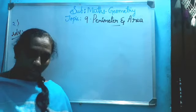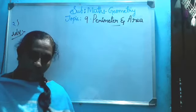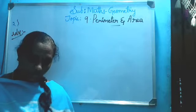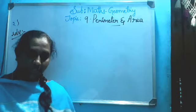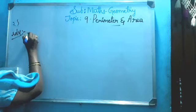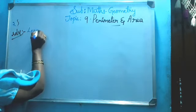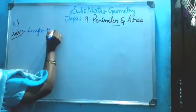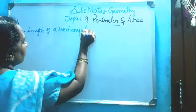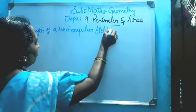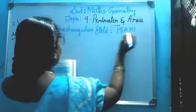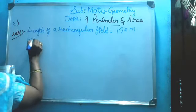Next, second question: a rectangular field has a length of 150 meters and breadth 120 meters. Find the perimeter of the field. Write: length of a rectangular field - field means an open area - how much? 150 meters.